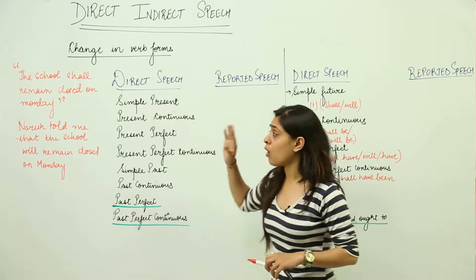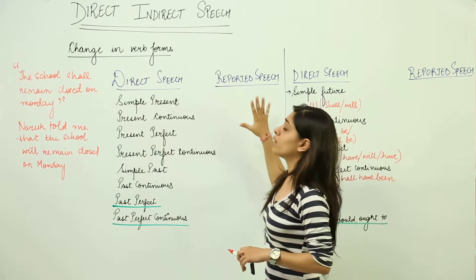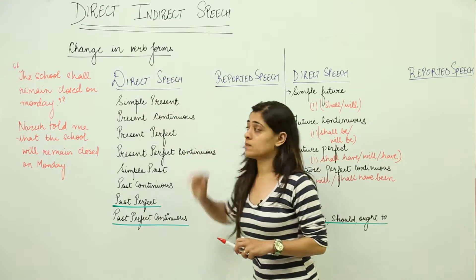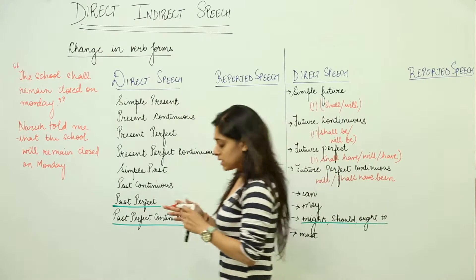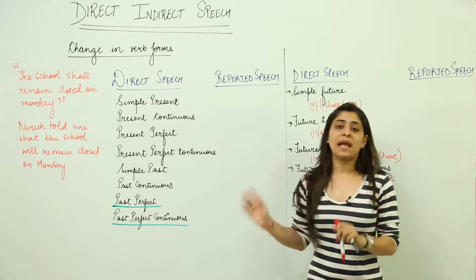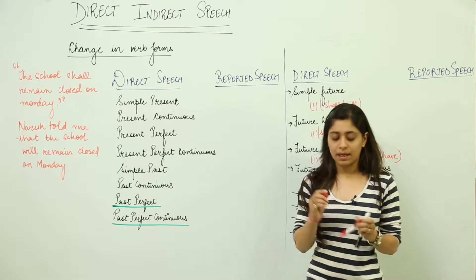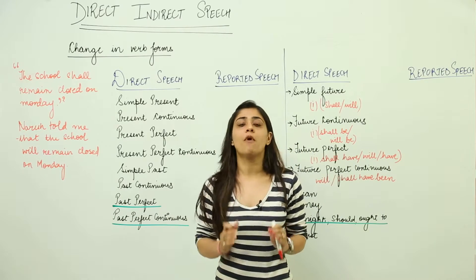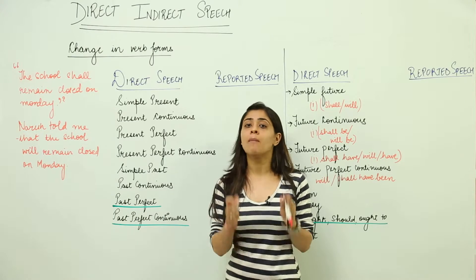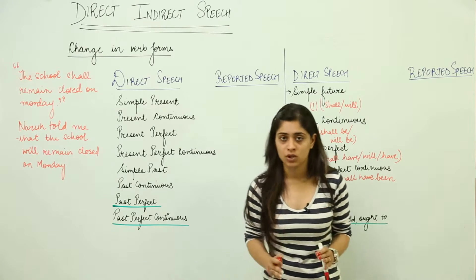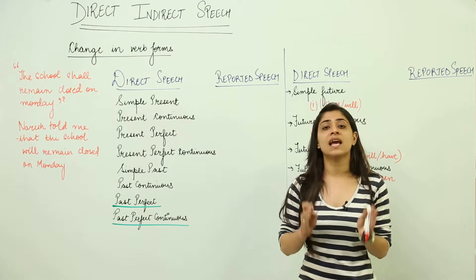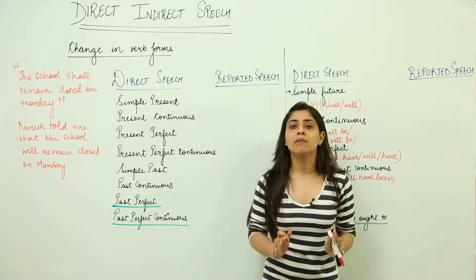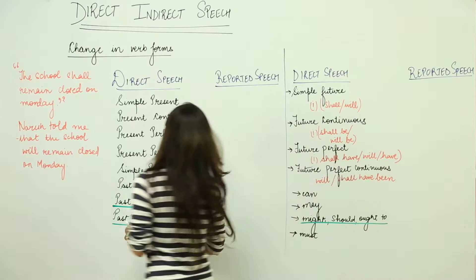Now let us understand what all speeches get converted into reported speech — this is the change in verb forms. Before explaining all the rules, let me make it very clear that all tenses or all verb forms get converted into a past tense in reported speech. We remove the inverted commas and convert all direct speeches to reported speeches in past tense.